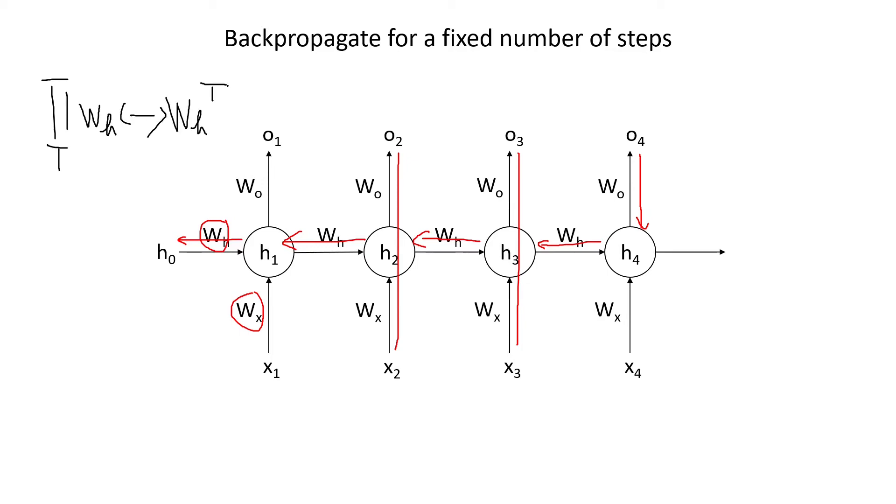Where t is basically the number of steps in the sequence. So obviously if we reduce t, then we also reduce the effects of vanishing or exploding gradients.